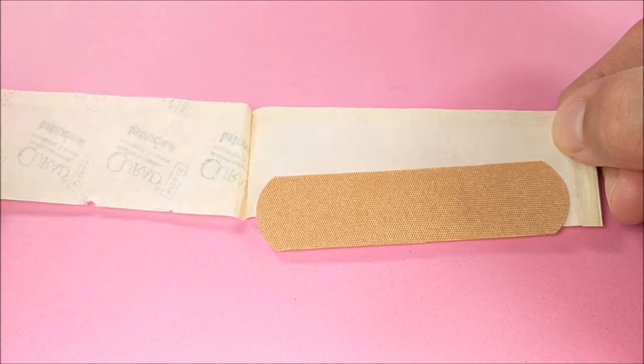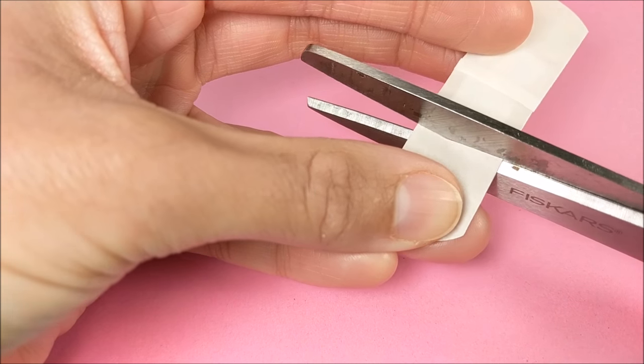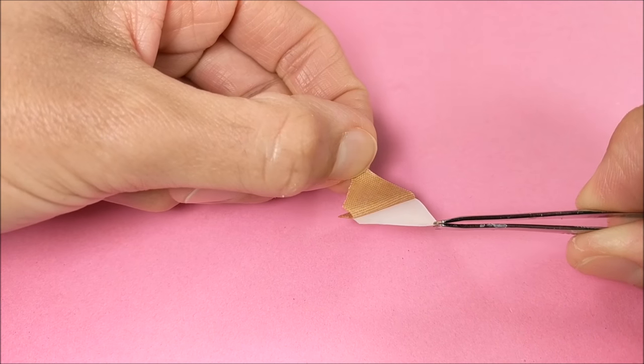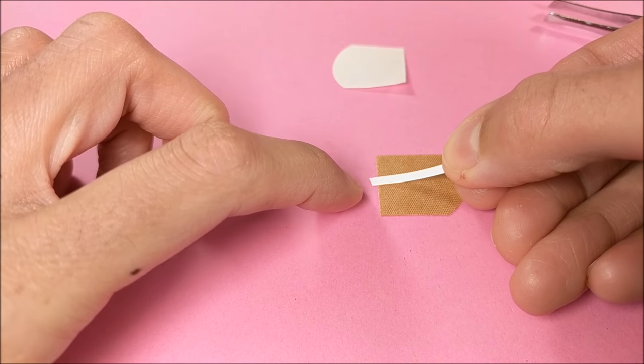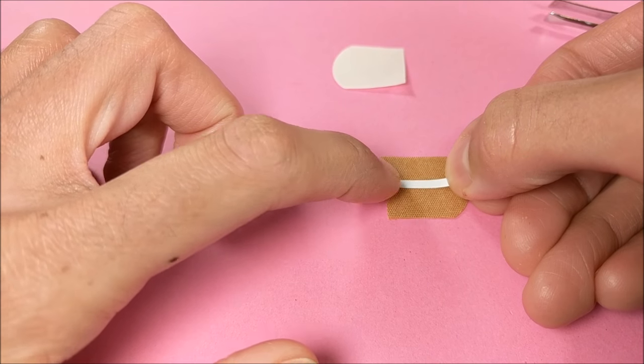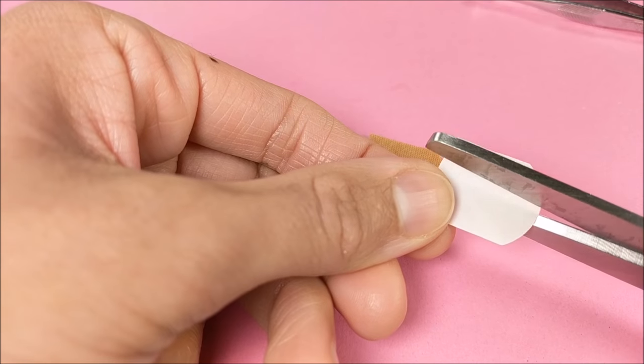To make my band-aids, I use an actual band-aid. I cut off a section, peel away the paper that comes with it, and add a piece of white paper to act as the center part of the band-aid. Then I cut the paper that came with the band-aid in half.